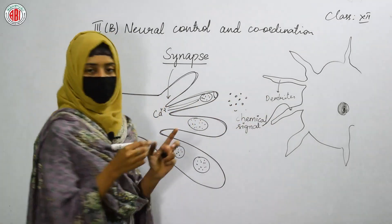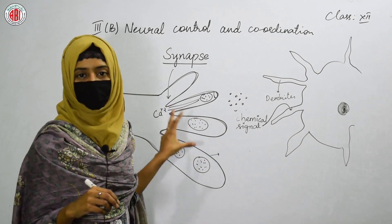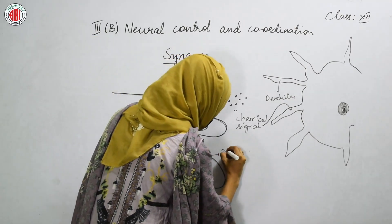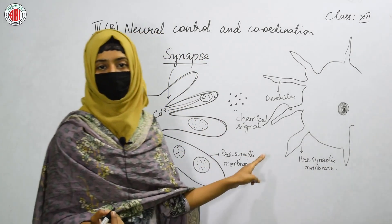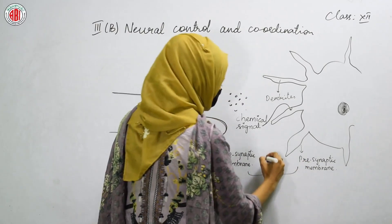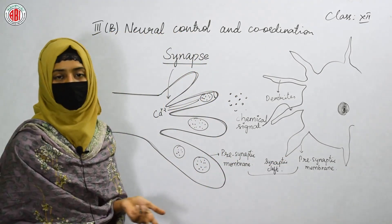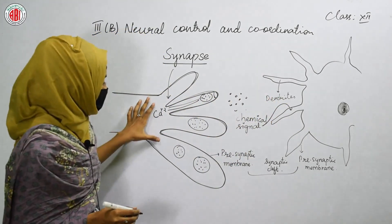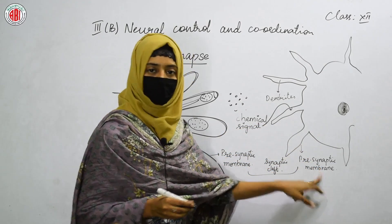The nerve cell where the signal is getting generated, where the nerve impulse is getting generated — the axon terminal of that nerve cell is termed as presynaptic membrane. The space between these two nerve cells or neurons is termed as synaptic cleft. One nerve cell shows the membrane termed as presynaptic membrane, and the other nerve cell shows the membrane called postsynaptic membrane.